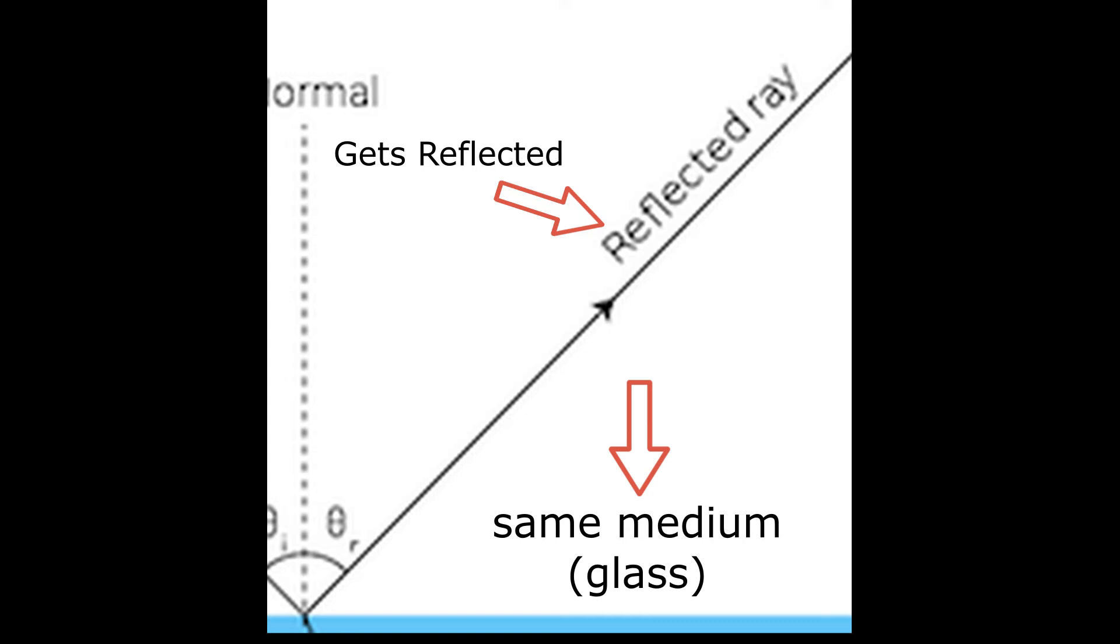Reflected ray is the ray of light which gets reflected of the same surface. As you can see in this picture, glass is the surface and the reflected ray gets reflected of the same surface which is glass.